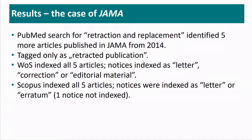We also found another case because during the review process we were asked: are there any JAMA articles in there? They were not indexed, although JAMA has published this type of article — they were not indexed as such in the NLM. But when we searched PubMed as 'retraction and replacement,' not 'corrected and replaced,' we found five articles published in JAMA from 2014. But they were tagged only as retracted publication, not as corrected and republished replaced articles. Web of Science and Scopus indexed all of them, but again, a little bit inconsistently.